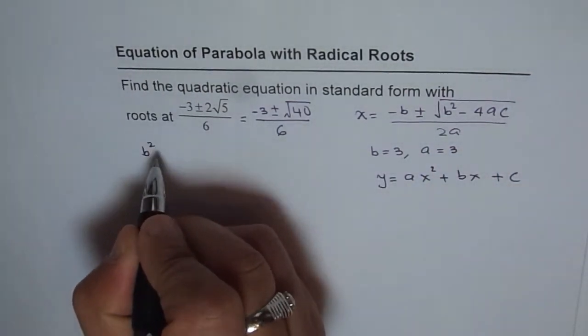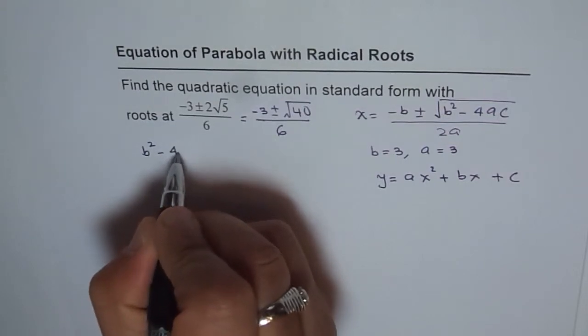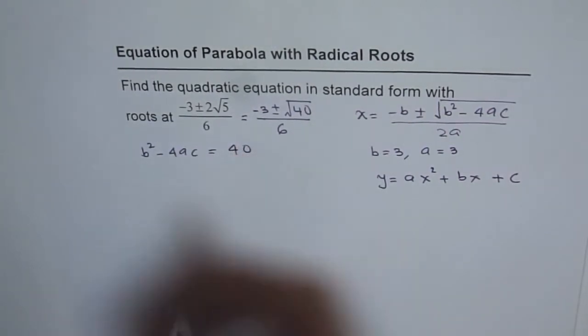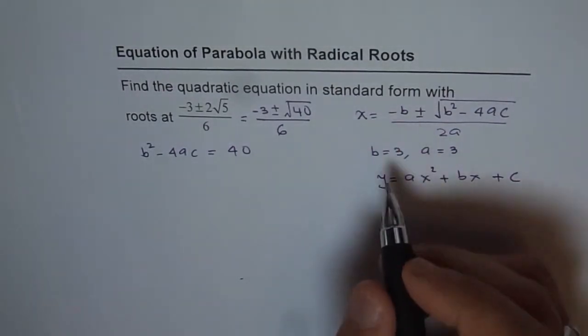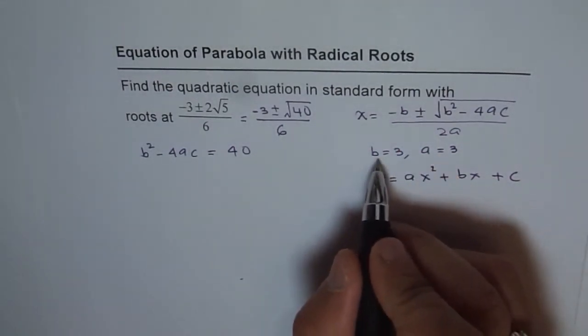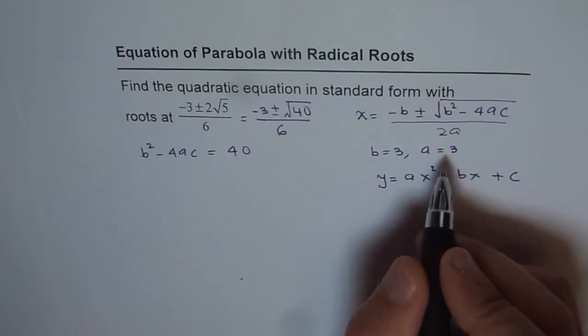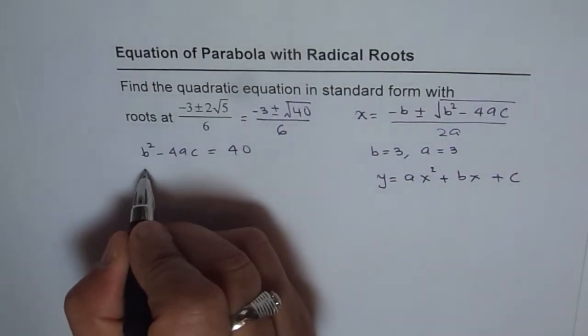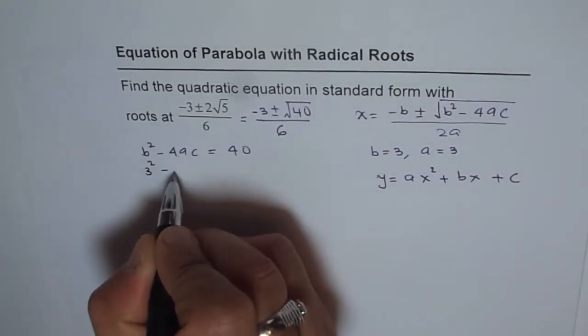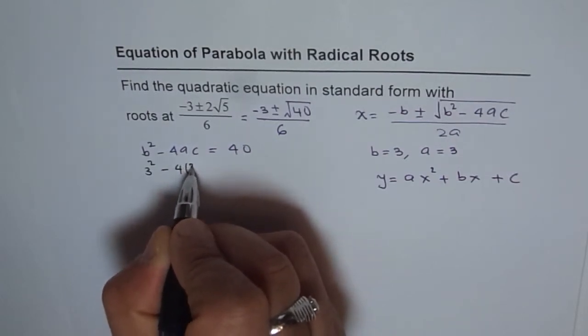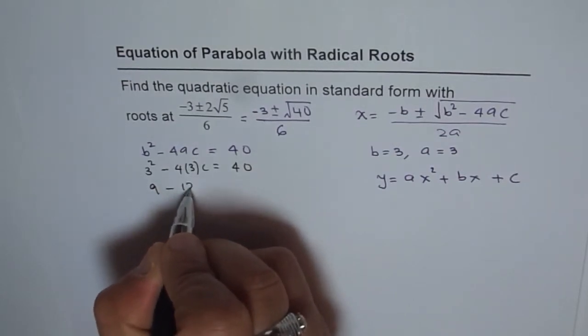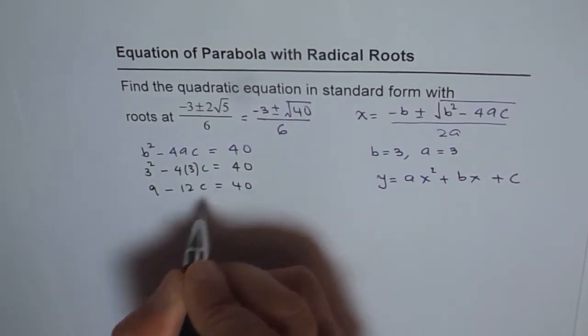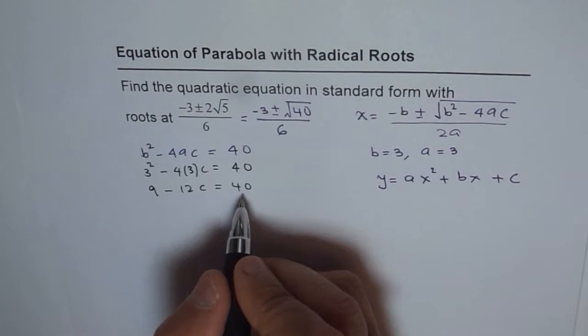Let's do that. The strategy is clear: b² - 4ac = 40. It's a neat strategy. In this equation, we substitute the values of b and a. Since b = 3 and a = 3, we get 3² - 4(3)c = 40, which gives us 9 - 12c = 40. From here, we can find c.